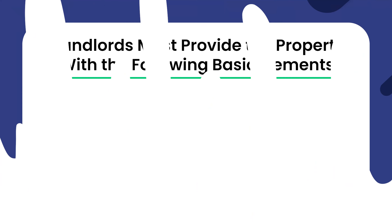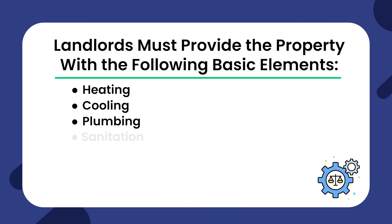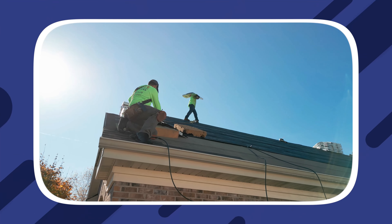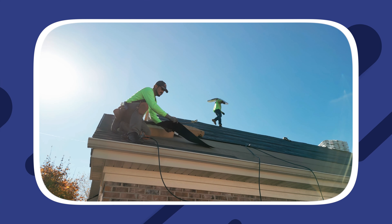As a landlord, you must provide a property with basic elements such as heating, cooling, plumbing, and sanitation. If there are any damages to the property that weren't the tenant's fault, you have to provide repairs within a reasonable amount of time, which is usually within 30 days. It's important to note that if the landlord fails to take care of necessary repairs, the tenant may choose to withhold rent or take legal action.